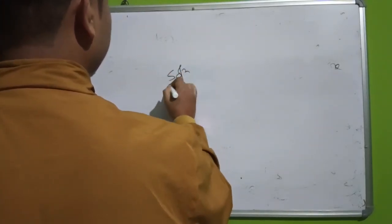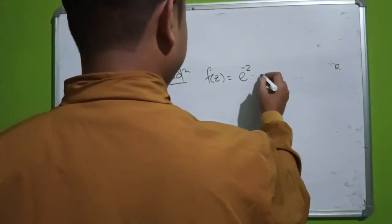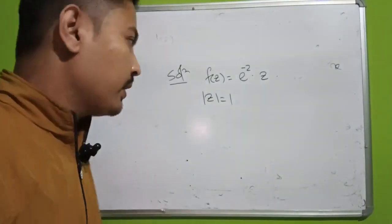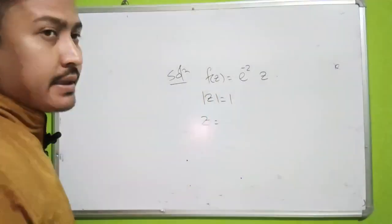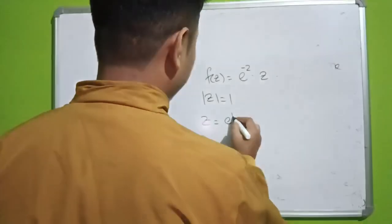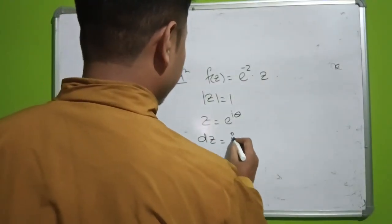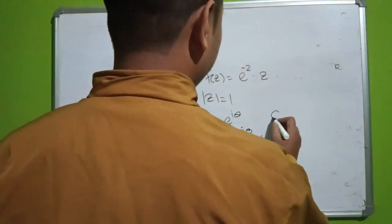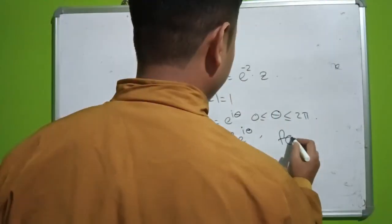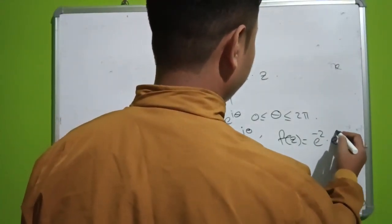For the solution: f(z) = e^(−2) · z. The circle C is |z| = 1, so the circle has center at the origin and radius 1. Using the polar equation, z = e^(iθ). Since the radius is 1, the polar form simplifies. dz = i · e^(iθ) dθ, and θ ranges from 0 to 2π. Substituting z = e^(iθ), the function f(z) becomes e^(−2) · e^(iθ).